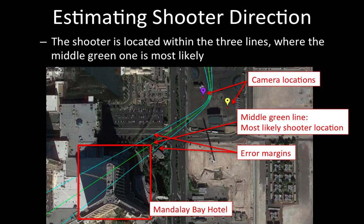As you can see here, there are three hyperbola lines, and the green one is the most likely shooter location.